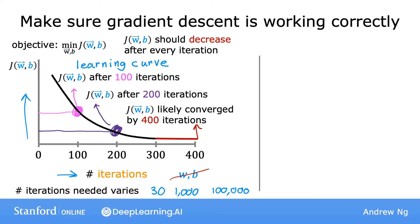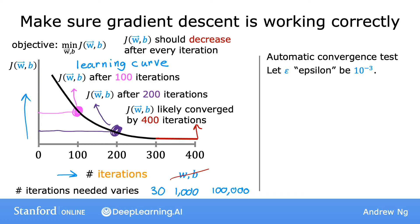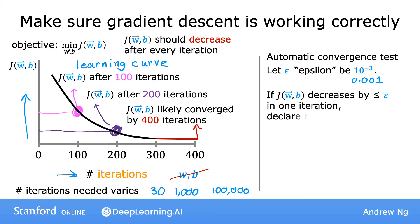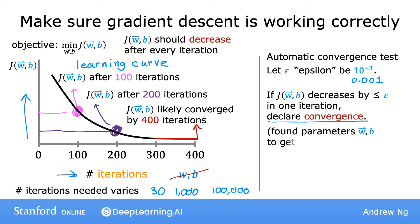Another way to decide when your model is done training is with an automatic convergence test. Let epsilon be a small number, such as 0.001 or 10 to the power of negative 3. If the cost J decreases by less than epsilon on one iteration, then you're likely on the flattened part of the curve and you can declare convergence — hopefully indicating that you found parameters w and b close to the minimum possible value of J. I usually find that choosing the right threshold epsilon is pretty difficult, so I actually tend to look at graphs like this rather than rely on automatic convergence tests.